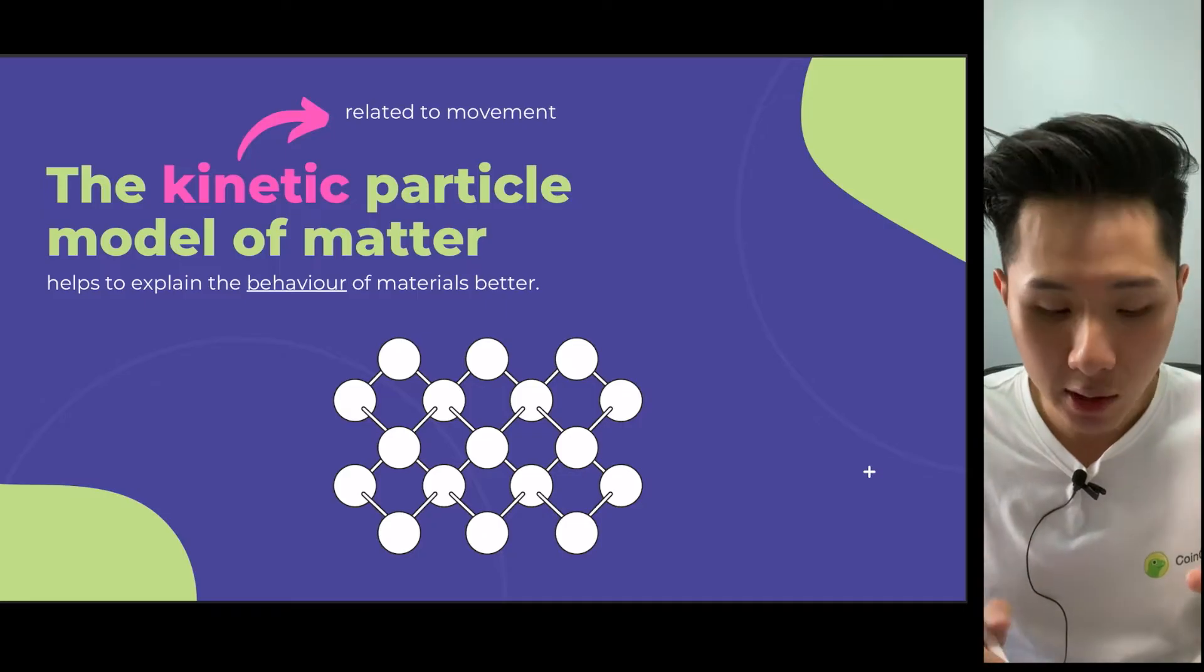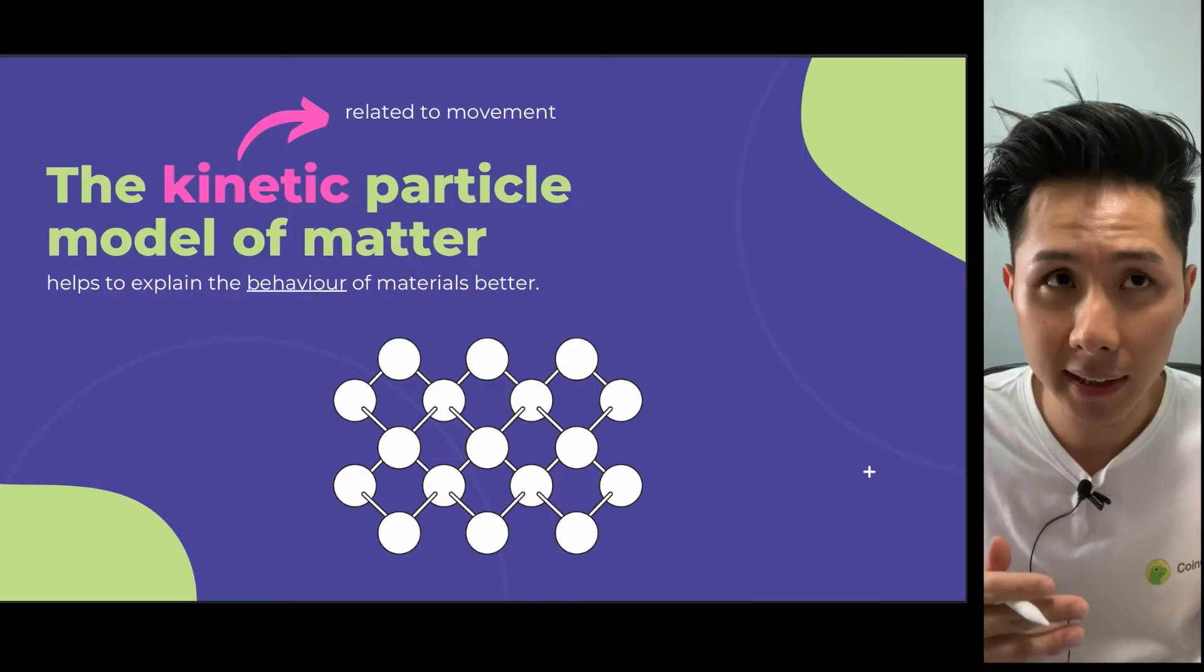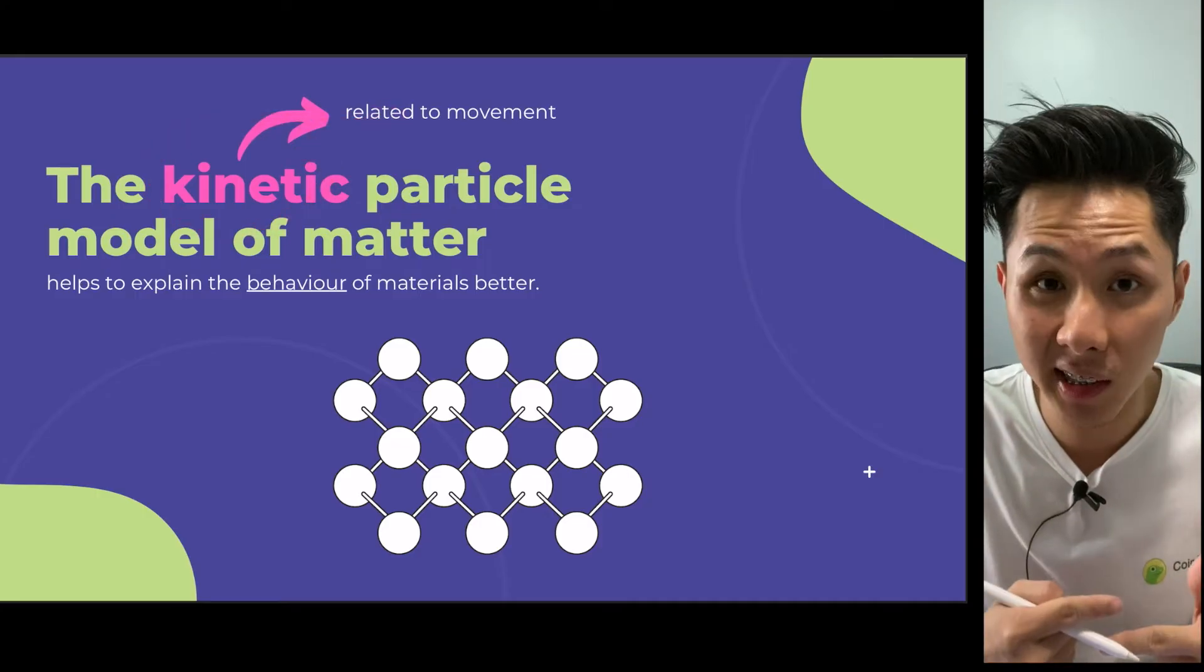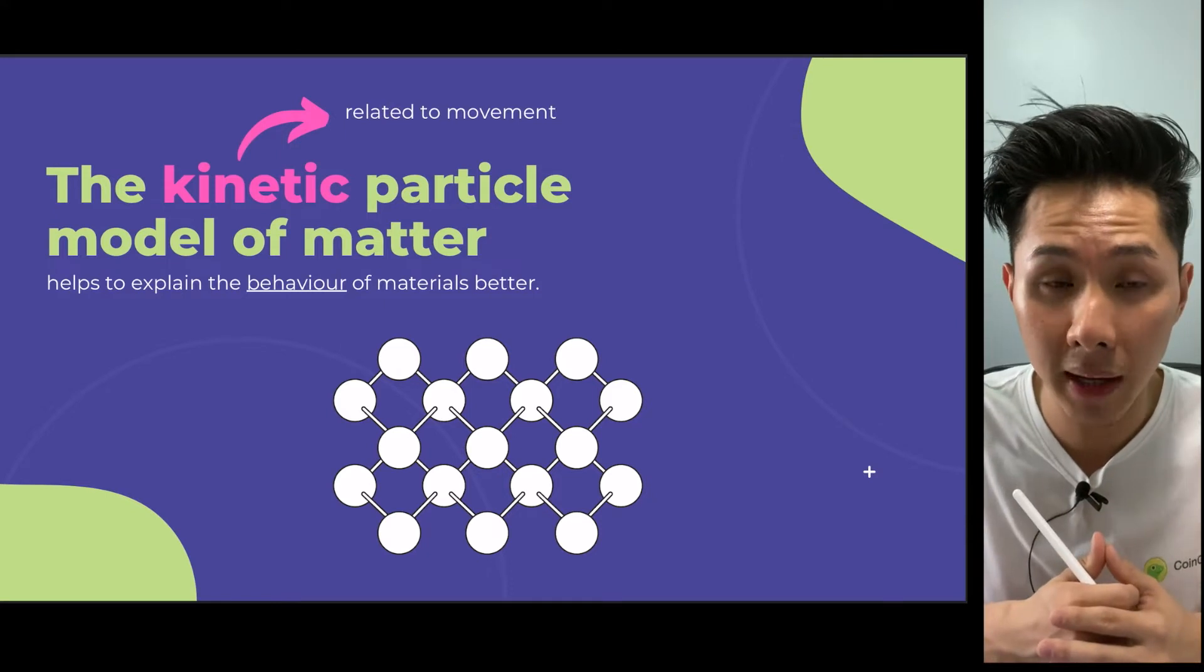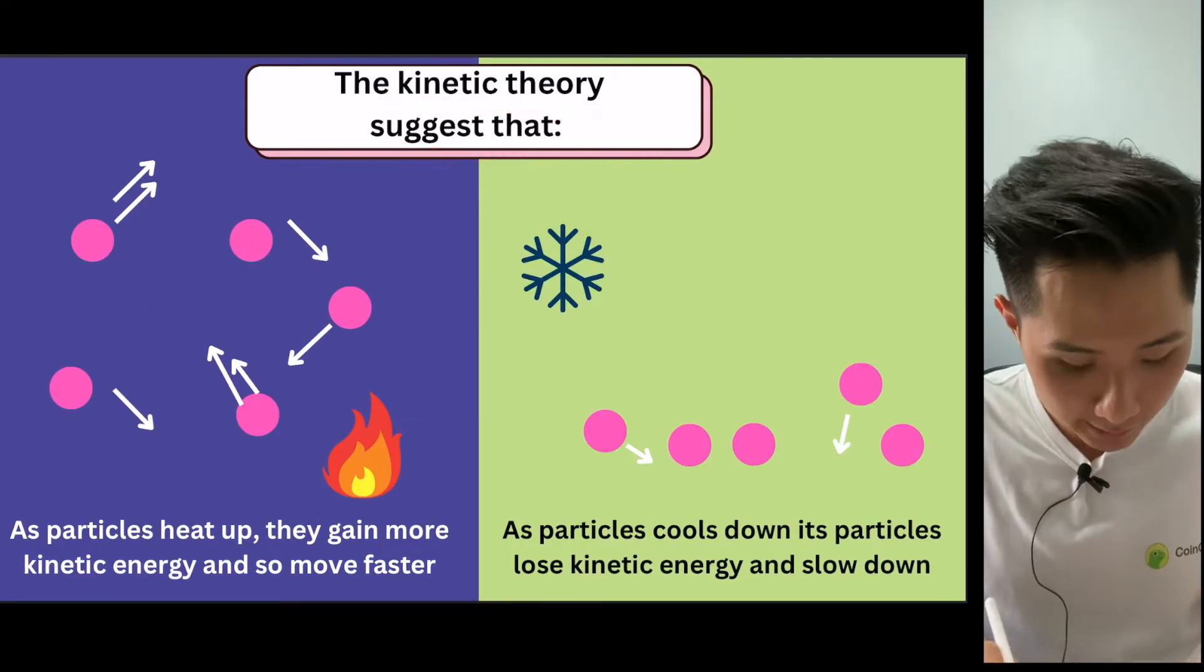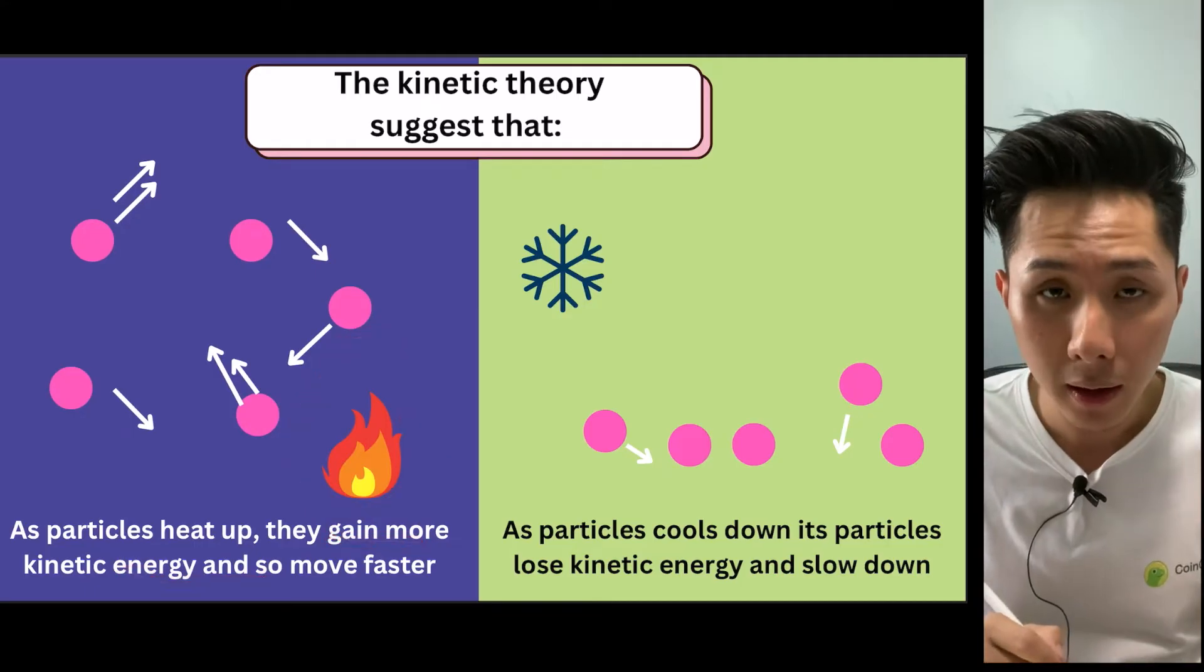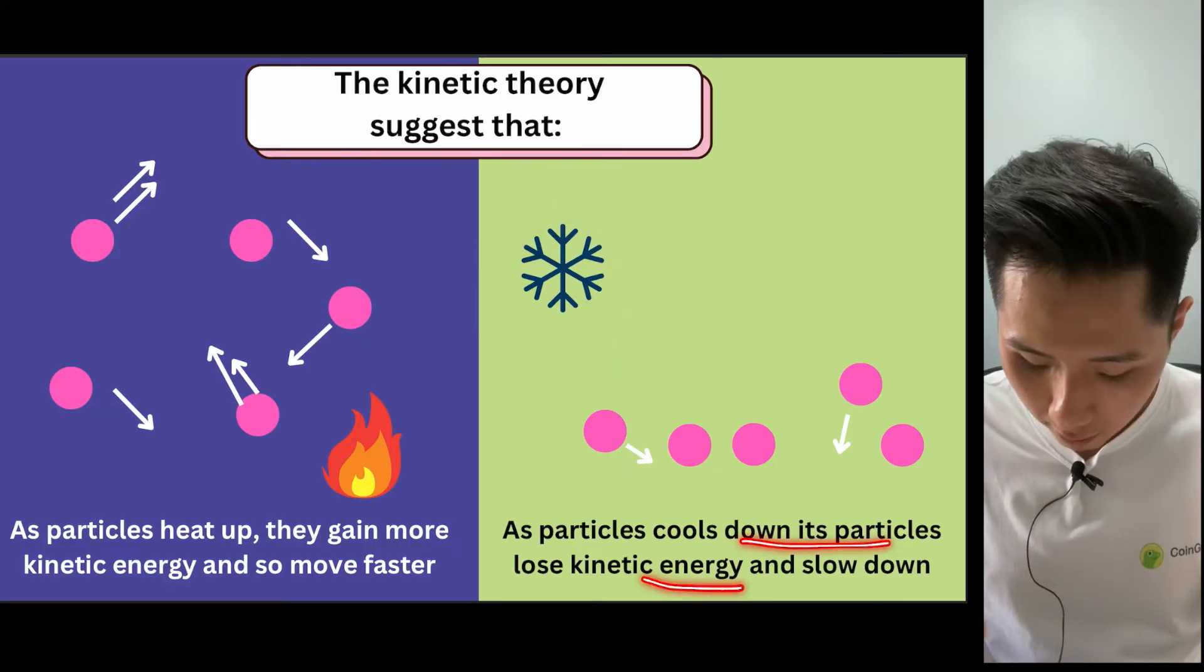So in this chapter, the main topic is the kinetic particle model of matter. As we learned in chapter 6, kinetic energy means movement. So we are basically studying how the movement of the particles is like in each of the three states of matter: solid, liquid, and gas. The kinetic theory suggests that as you heat up particles, they will gain more kinetic energy and move faster. But if you cool them down, you are going to slow down the particles.